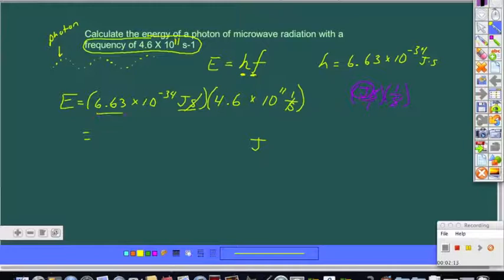To finish solving, we're going to multiply these numbers, 6.63 times the coefficient of 4.6. And we get an answer in our calculator, 30.498 times 10 to what power?